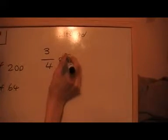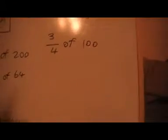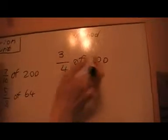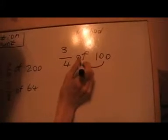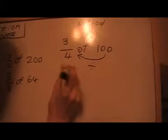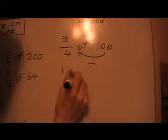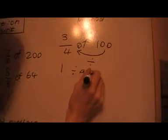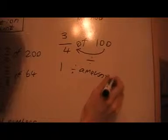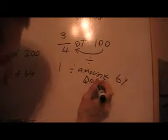This is the method. What I do is I divide this number here by the denominator. So step one, divide amount by denominator.